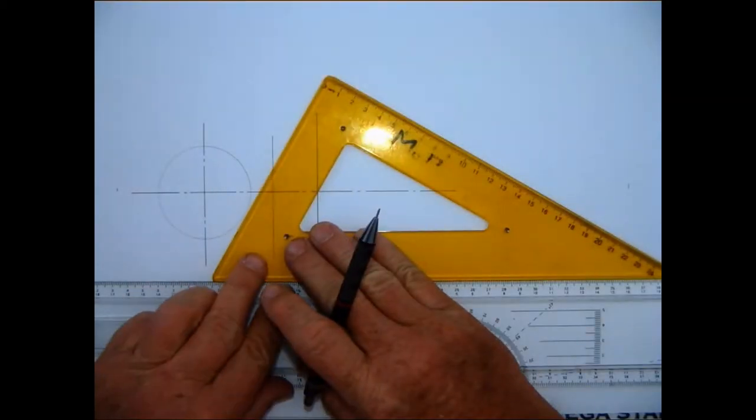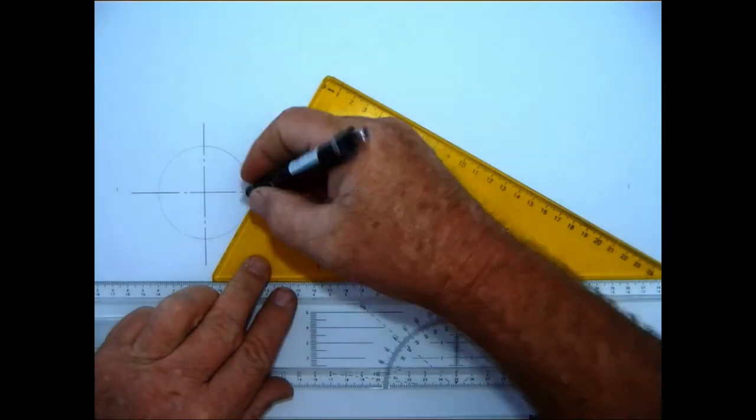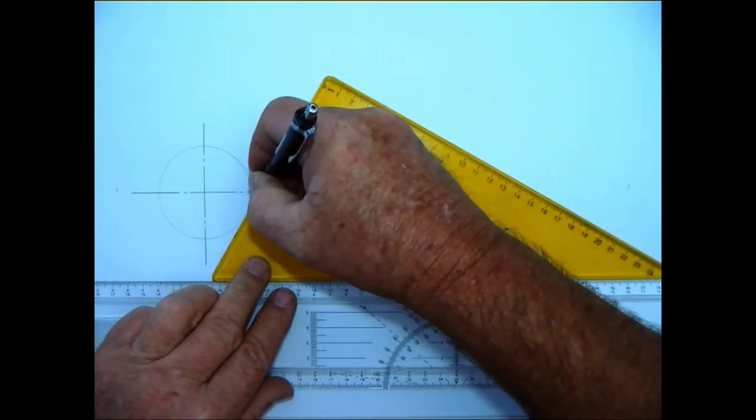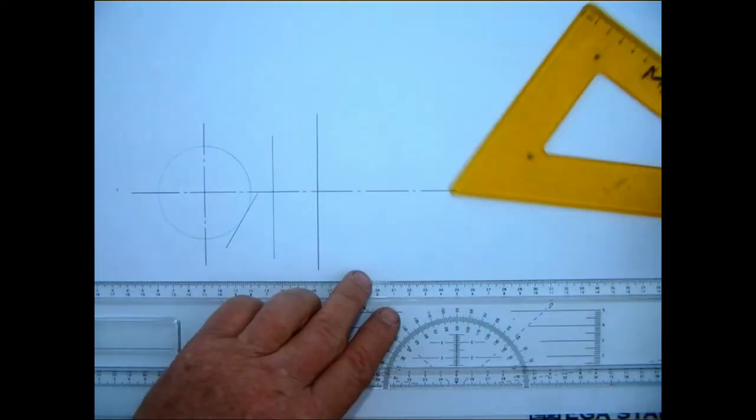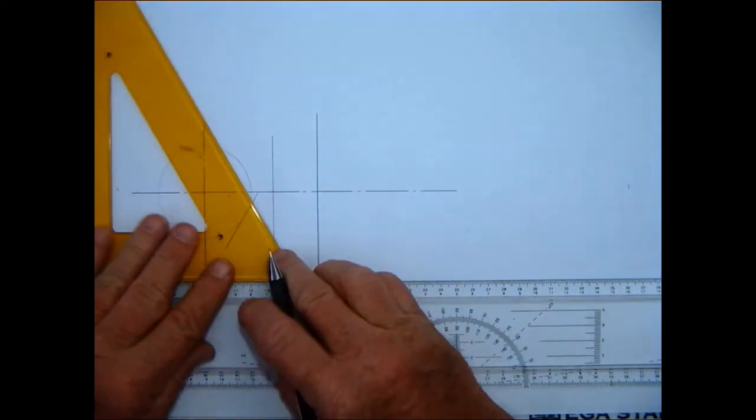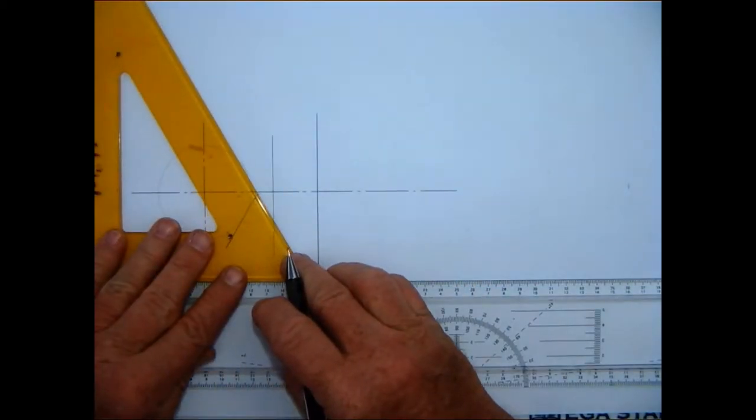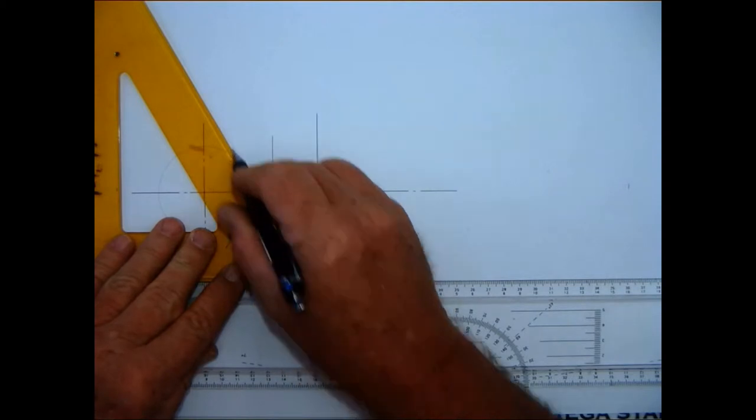So what's going to happen now is I'm going to draw a circumscribed hexagon that is now in this specific position.